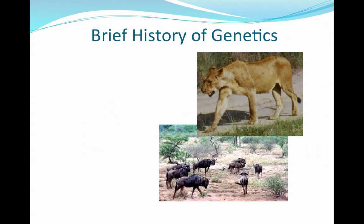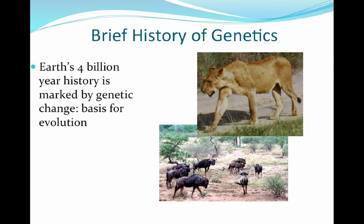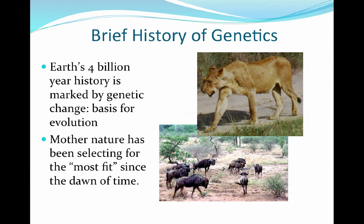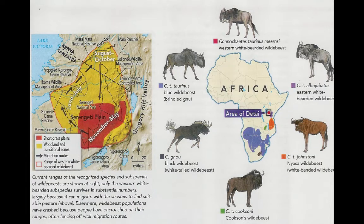Let's do a brief overview of genetics. We've got fossil records going back at least four billion years — that's about as far back as our carbon dating is really sound. In this four billion year history, we've noticed through fossil records that there has been a basis for evolution. Mother nature has her own way of selecting individuals that are the most fit, and this has happened since the dawn of time.